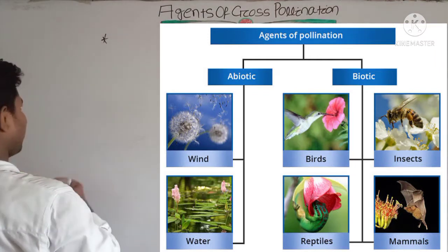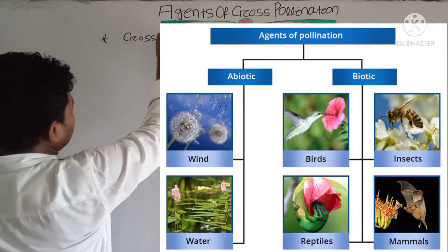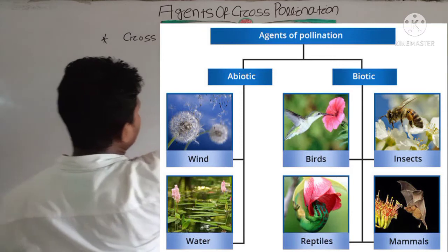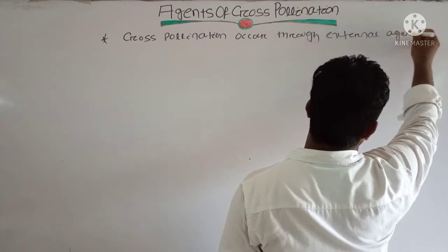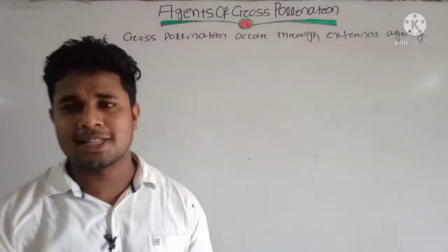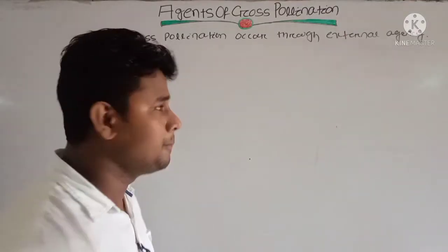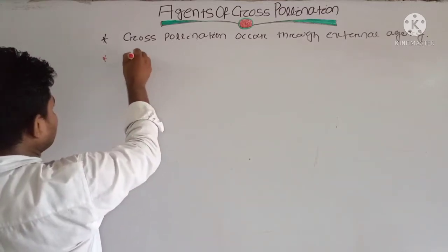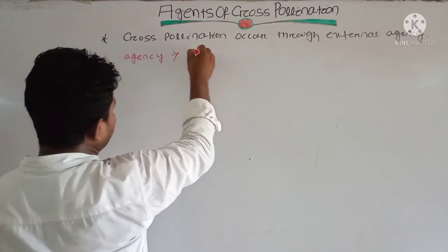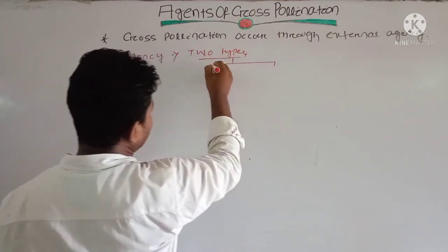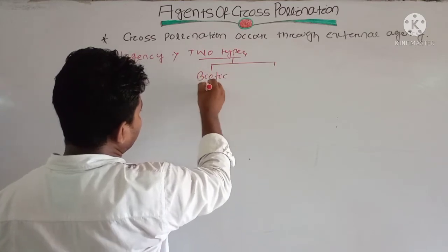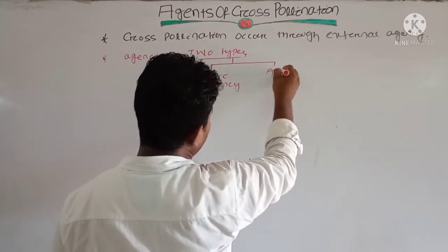Cross-pollination occurs through external agency. That external agency may be of two types: one is your biotic agency, and another one is your abiotic agency.